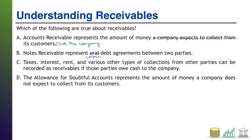How about C: taxes, interest, rent, and various other types of collections from other parties can be recorded as receivables if those parties owe cash to the company. This one is true. Taxes, interest, rent — those just represent some of many receivables that a company could put on its books, assuming someone else owes them something related to those items. You can have other receivables with these names if you are owed that money.